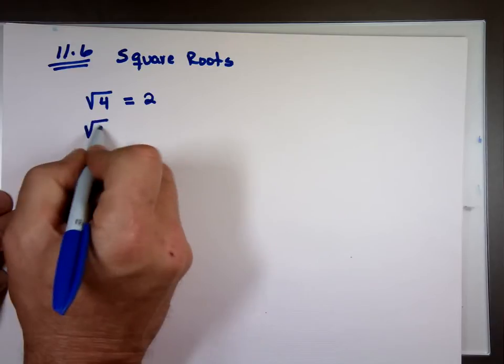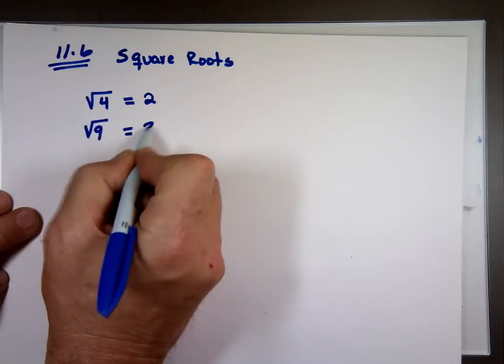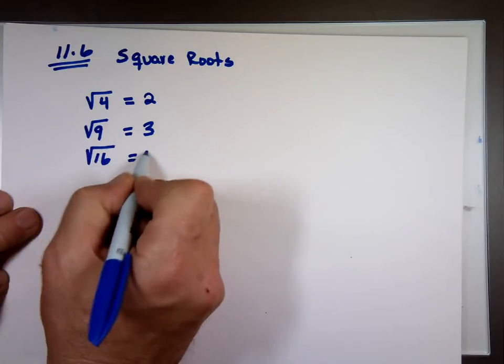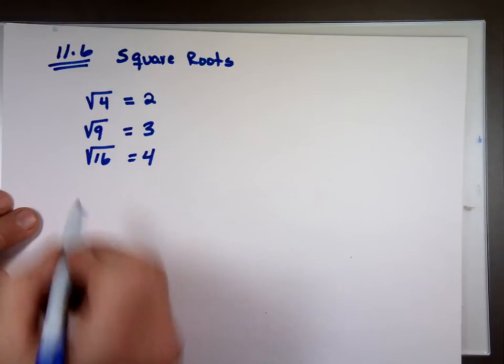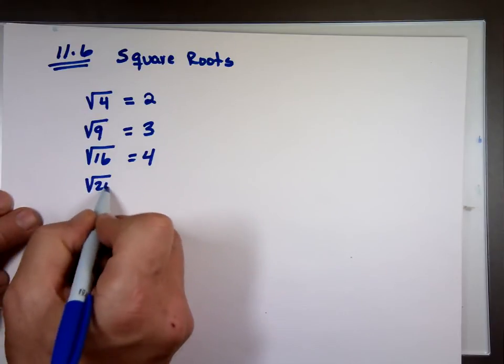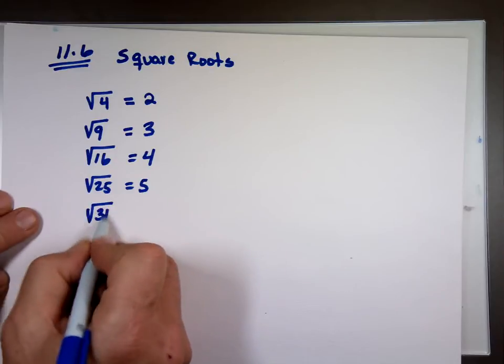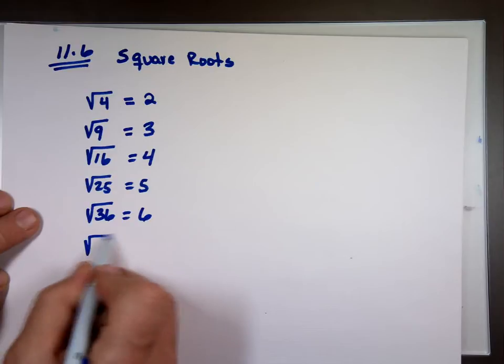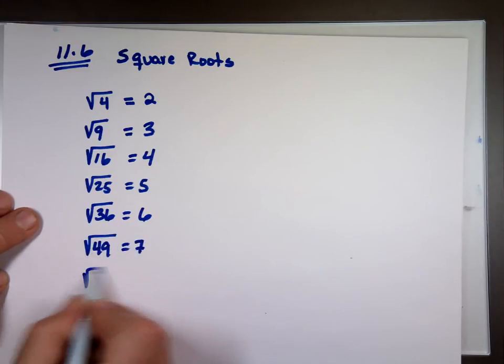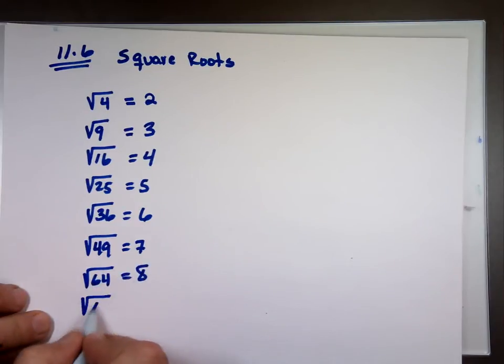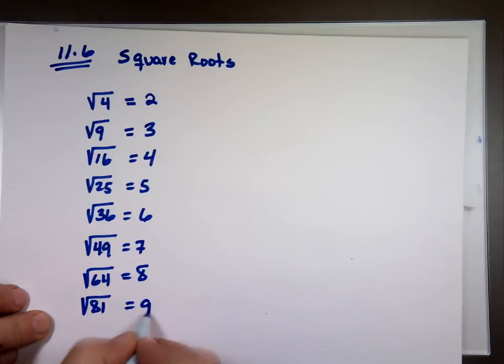What is the square root of 9? 3 times 3 is 9. What's the square root of 16? 4. 4 times 4 is 16. What's the square root of 25? What's the square root of 36? What's the square root of 49? Square root of 64? 8. Square root of 81? 9. The square root of 100? 10.